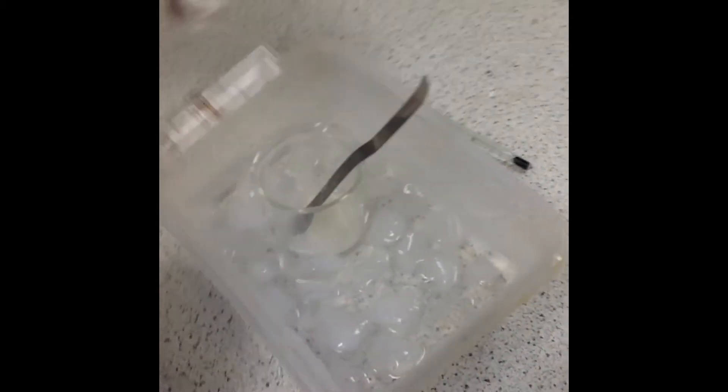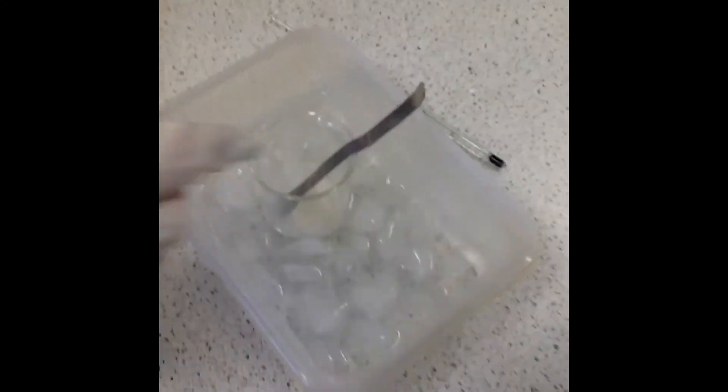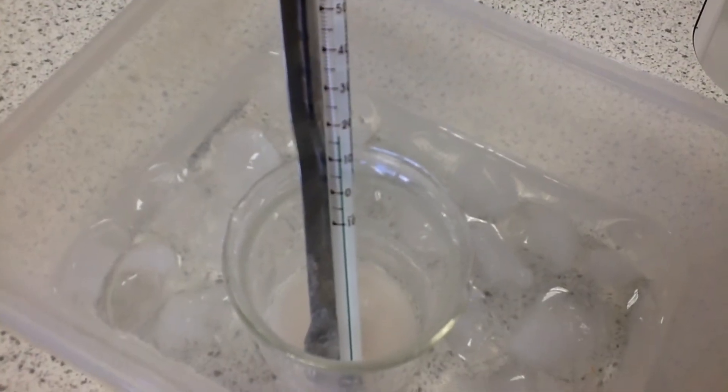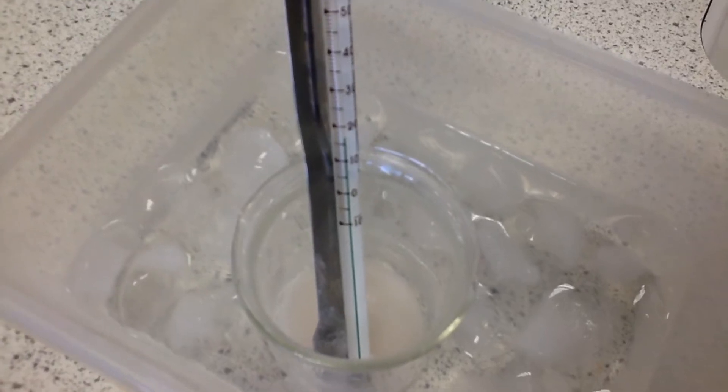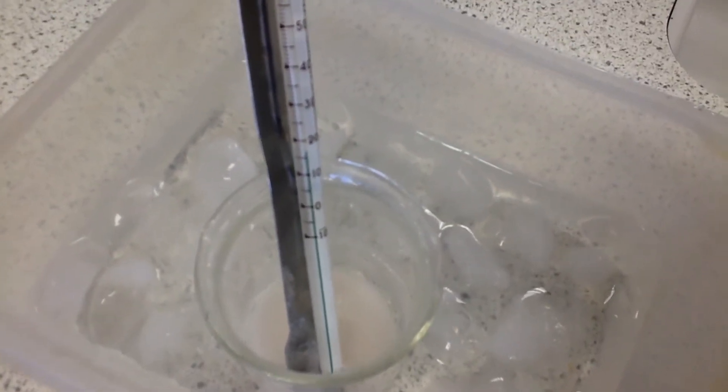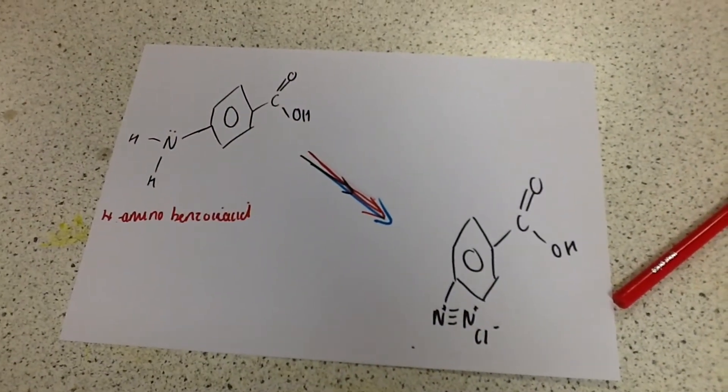This is our water bath to keep our solution between 5 and 10 degrees Celsius. We are trying to get the solution down to between 5 and 10 degrees. This is what happens in stage one.